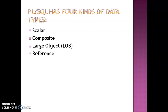Basically there are four kinds of data types we can use in PL/SQL: scalar, composite, large objects, and references. Scalar values have single values with no internal components, such as numbers, dates, or boolean. Large objects are pointers to large objects stored separately from other data items, such as text, graphic images, video clips, and sound waveforms. Composites are data items that have internal components that can be accessed individually, such as collections and records. References are pointers to other data items.